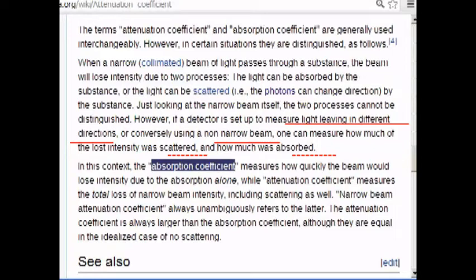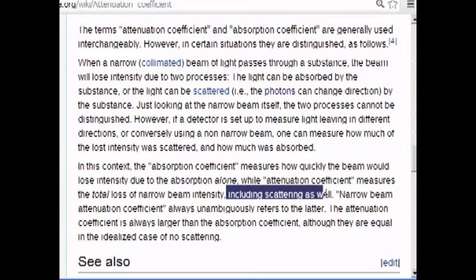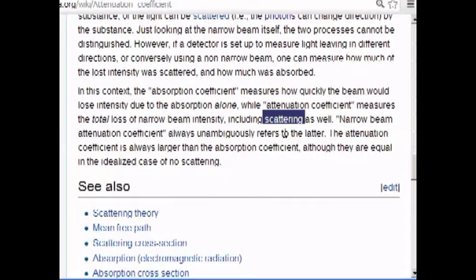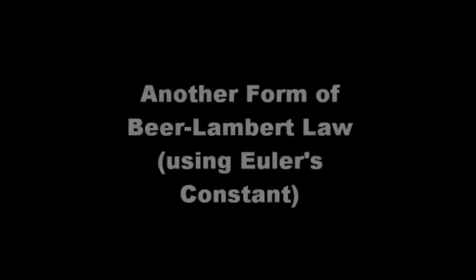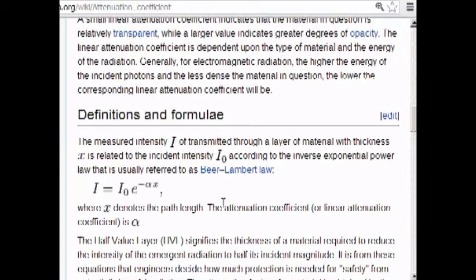In this context, the absorption coefficient measures how quickly the beam would lose intensity due to the absorption alone, while attenuation coefficient measures the total loss of the narrow beam intensity, including scattering as well. Now, I have a question about scattering, and at what point does the scattering become absorption? Because if you scatter things to 90 degrees, then it is completely scattered, and it is effectively absorbed.